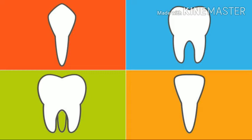Canines are the large pointed teeth just behind the incisors. The canines are for piercing and tearing the food. There are two canines in each jaw, one behind the left incisor and the other behind the right incisor.